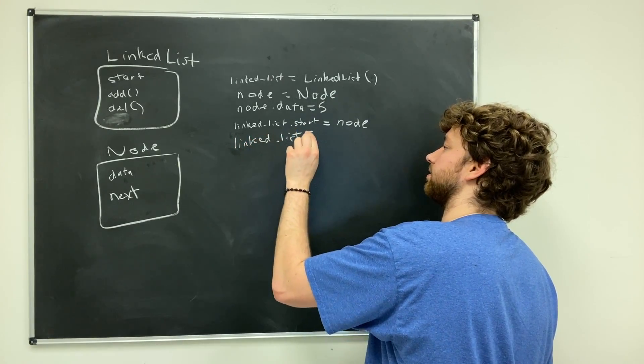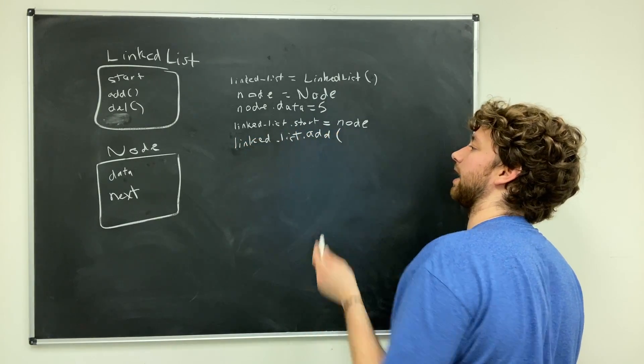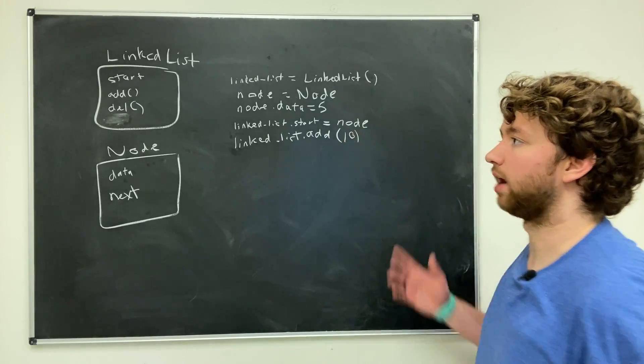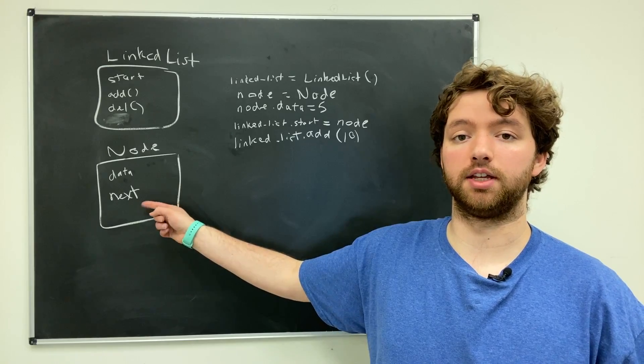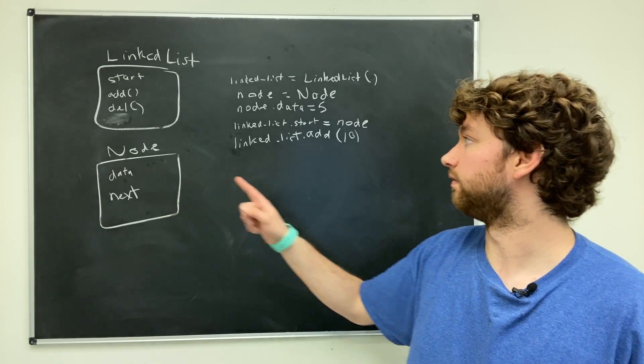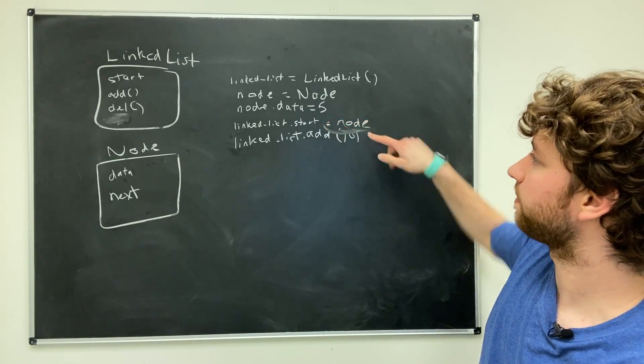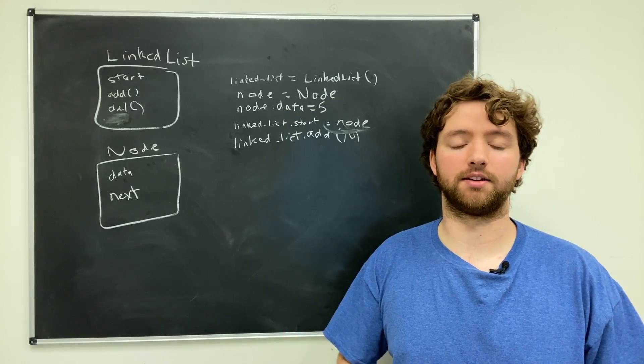And then we could define the add method to do more fancy things, so we can say linked_list.add, pass in some other data such as 10, and behind the scenes it'll create a new node and set it to the next pointer here for this node here.